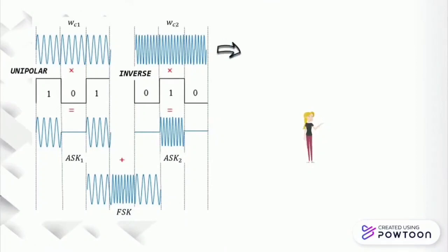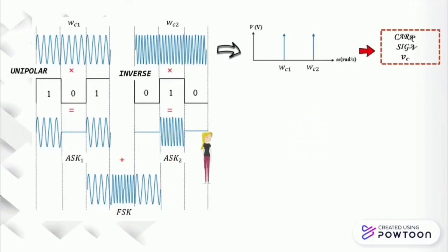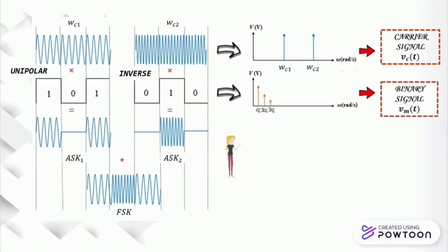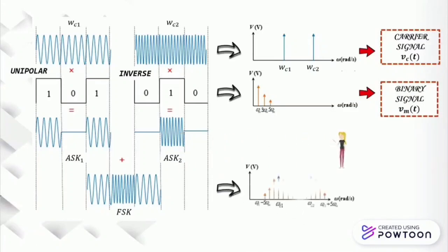Frequency of C1 signal indicates the lower frequency, whereas frequency of C2 indicates the higher frequency with the same amplitude. The information signal, known as the binary signal, will vary according to the square wave levels of the signal. Finally, after combining both signals with the help of VCO, a frequency shift keying signal is formed.